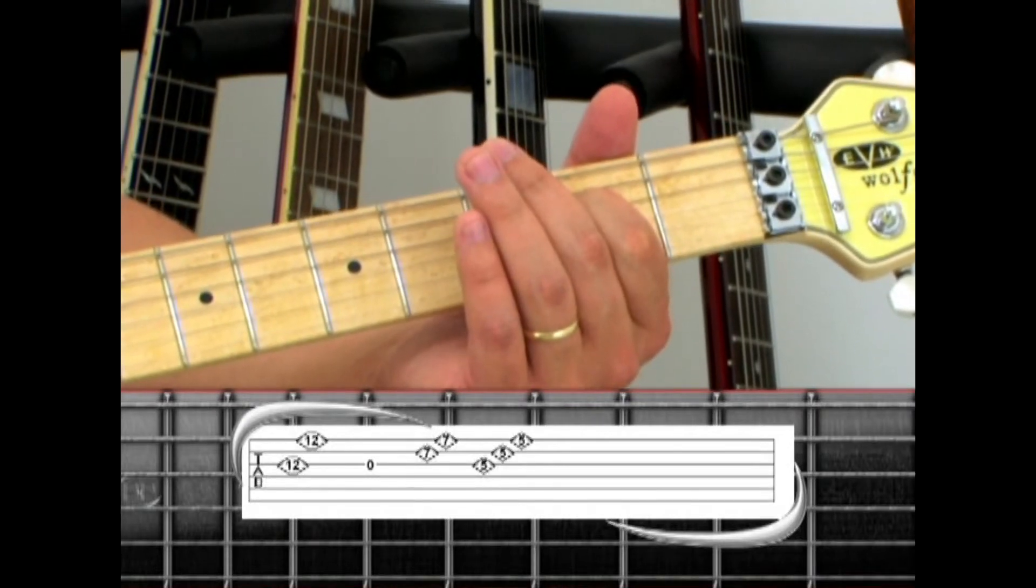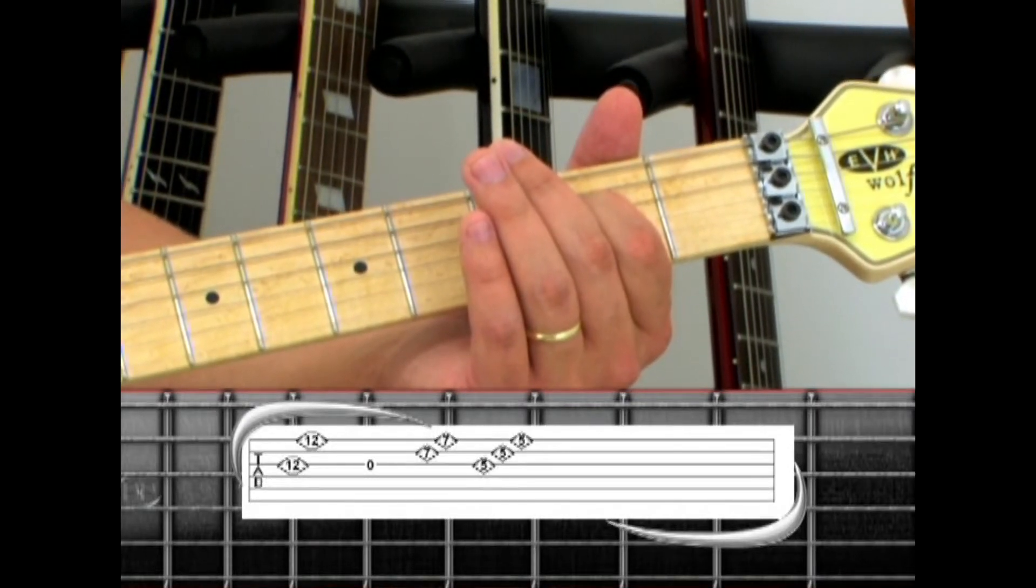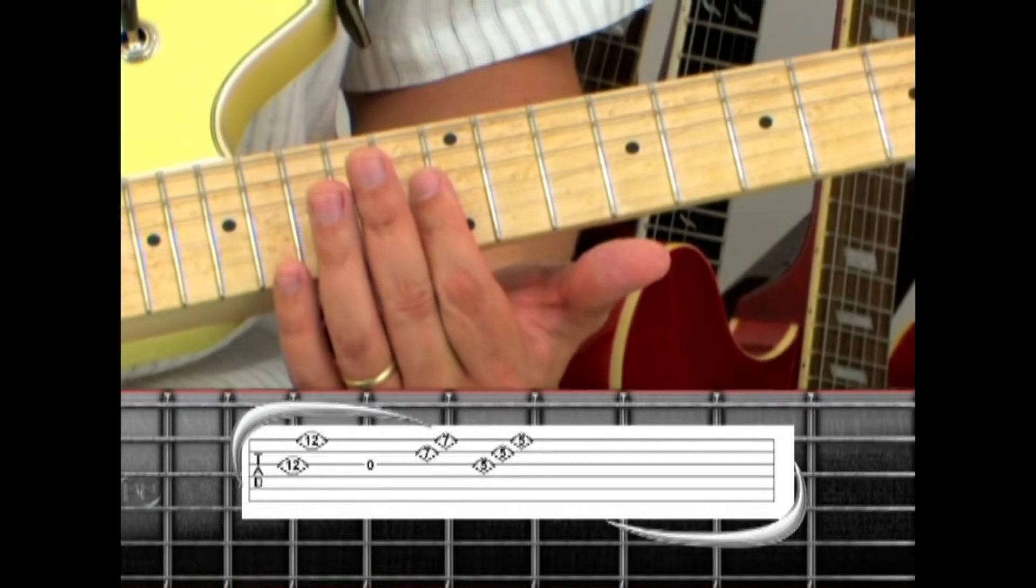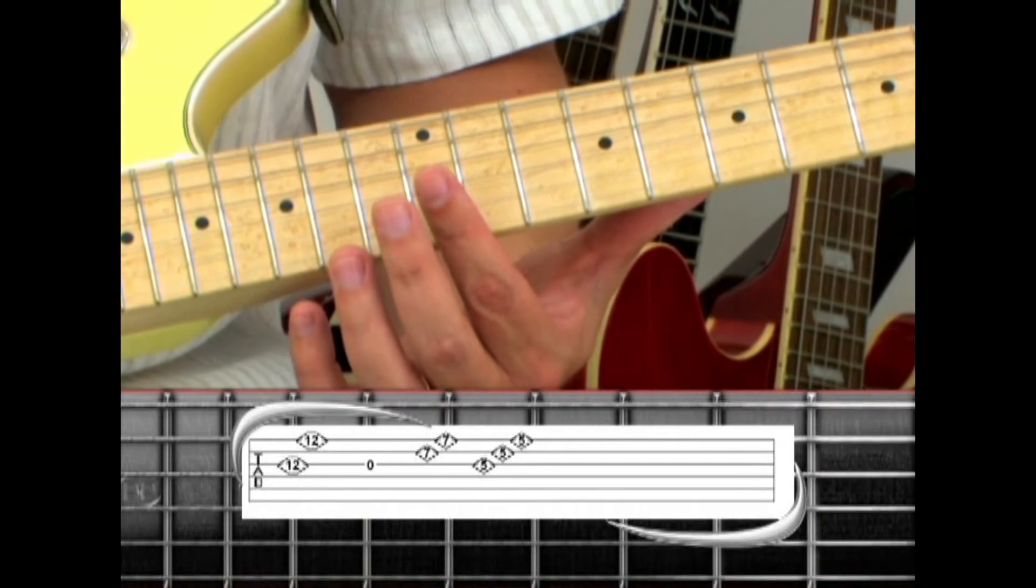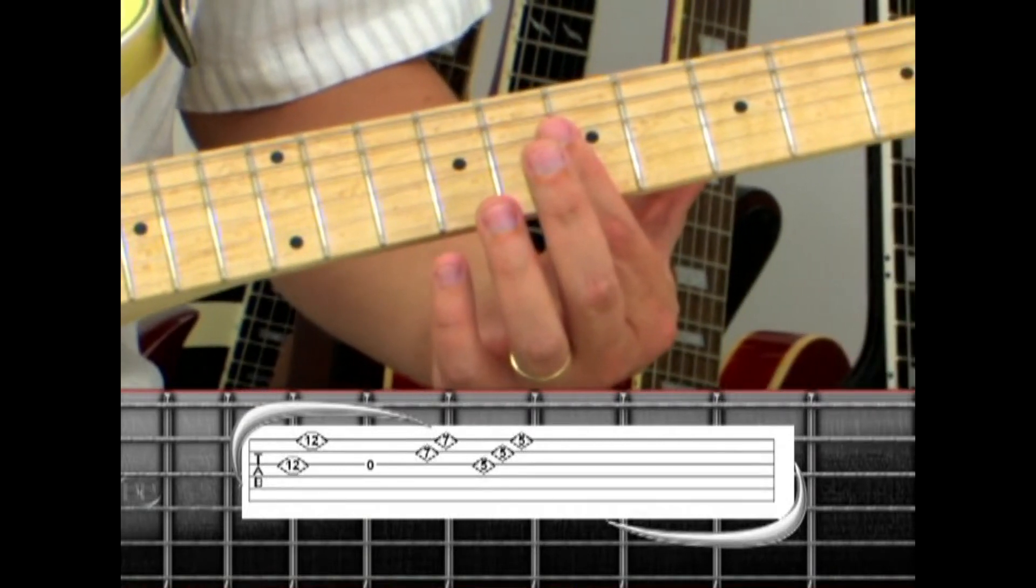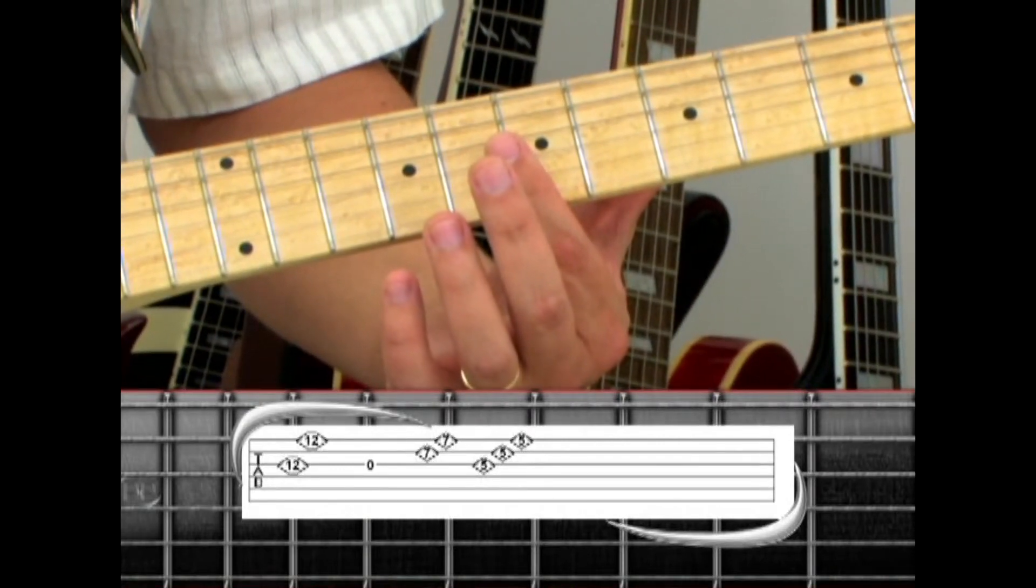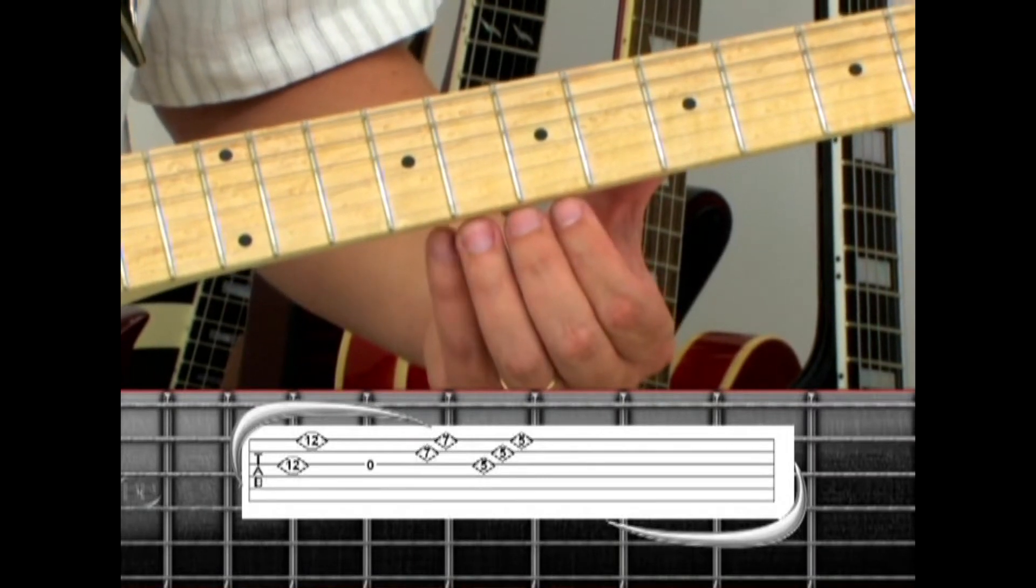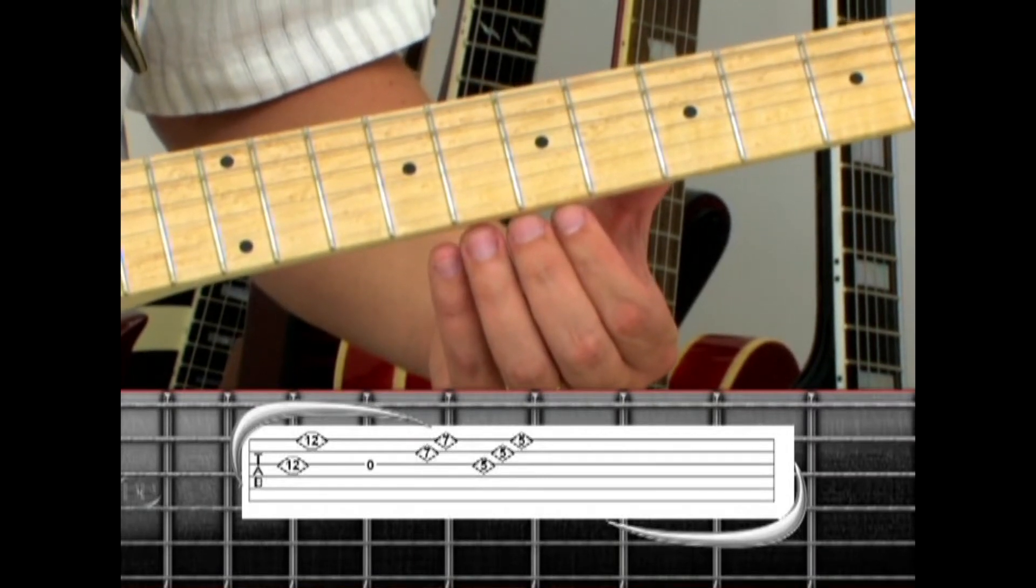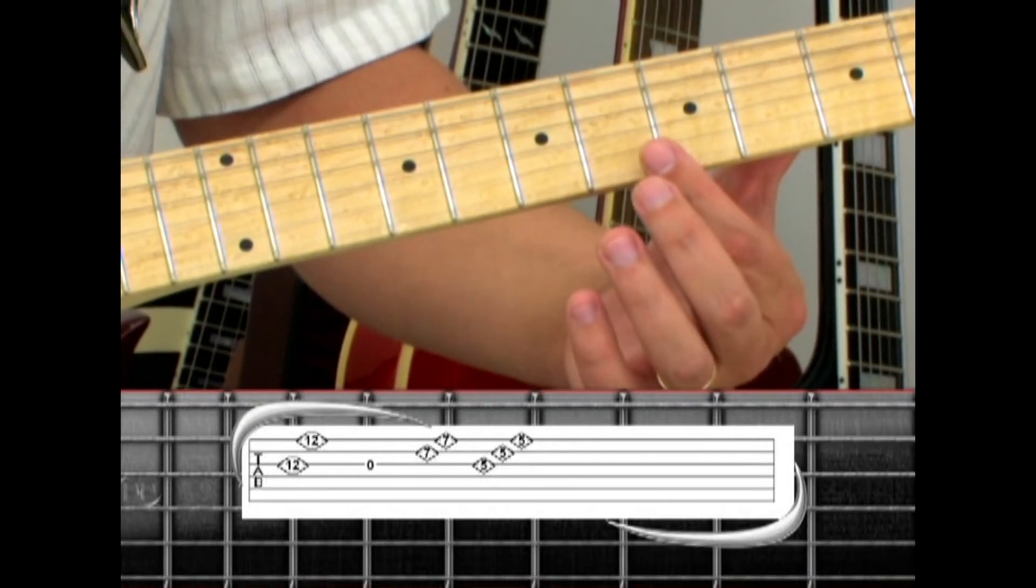Coming out of the rhythm, slide up to harmonics on the 12th fret of the 3rd, then 1st string. 3rd string open while moving down to the 7th fret harmonics, then pick the 2nd and 1st string harmonics, and end with 5th fret harmonics on 3, 2, and 1.